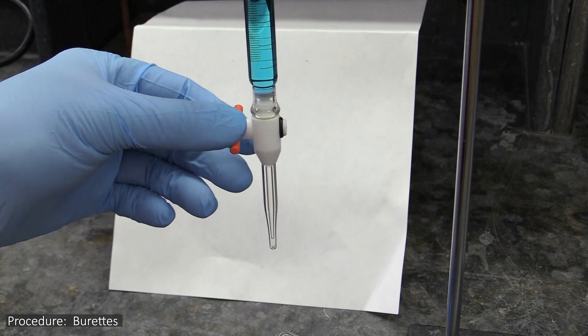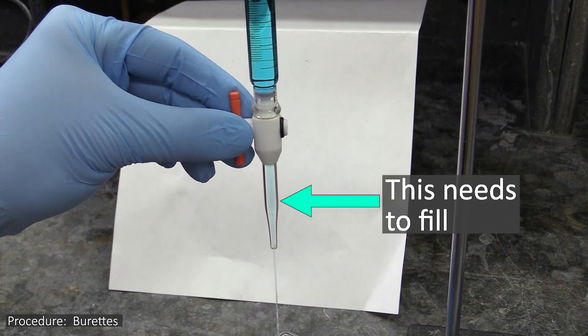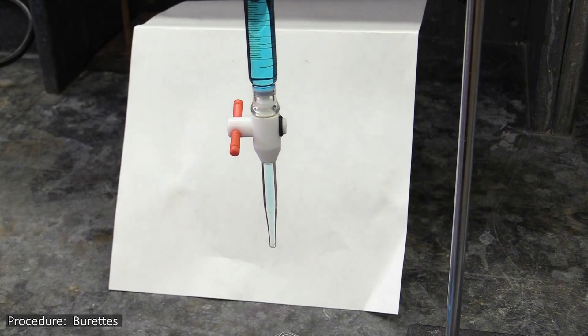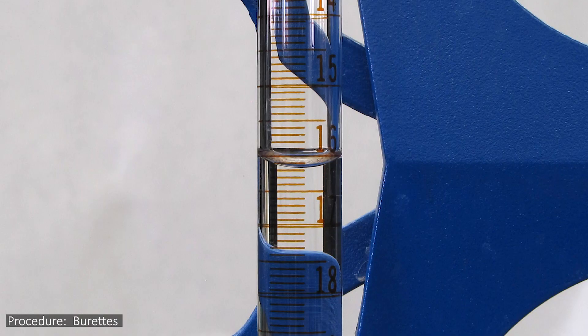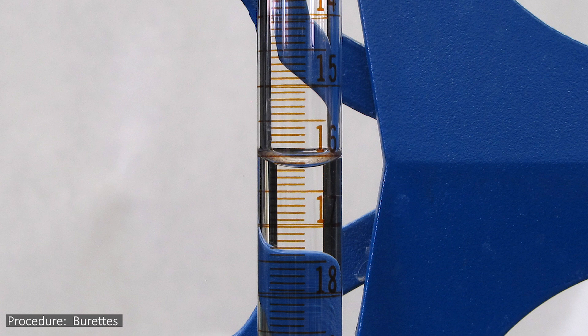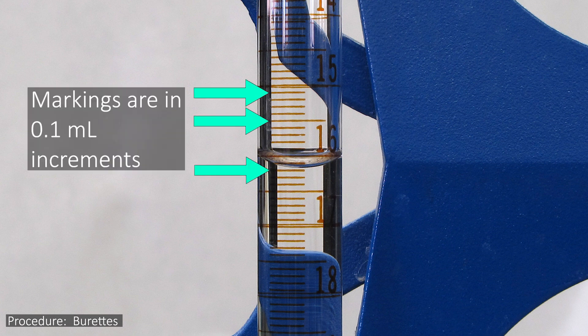There are two reasons for doing this. One is it gets all the air out of the spout at the bottom. The other reason has to do with how the burettes are read. Since the actual physical markings on a burette are in tenths of a ml, you have to interpolate between them to read in hundredths of a ml.